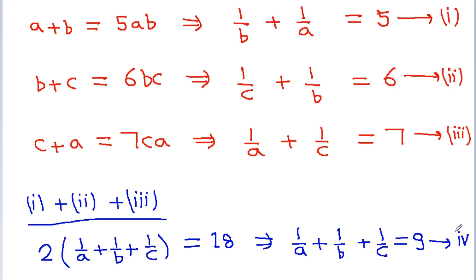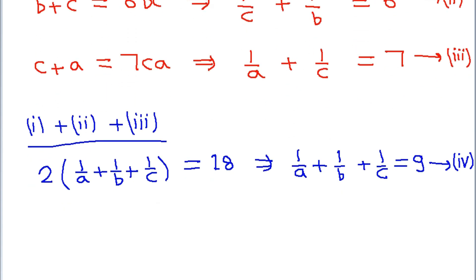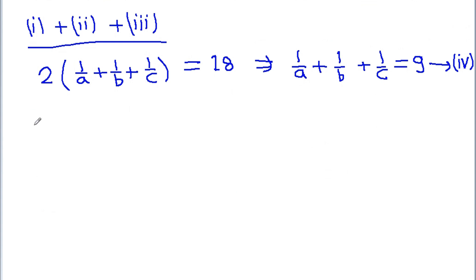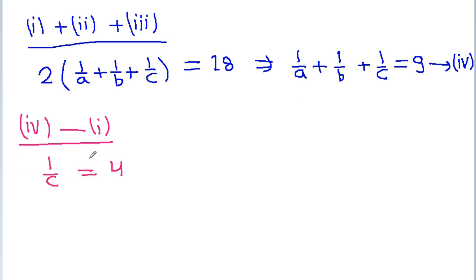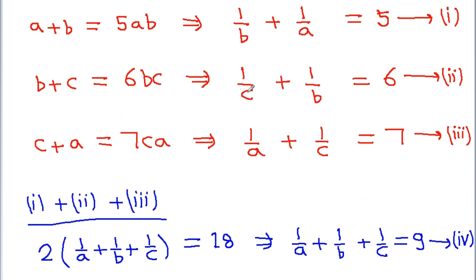Let's call this equation 4. Now if we subtract equation 1 from equation 4, then 1 by b and 1 by a will get cancelled and we get 1 by c is equal to 9 minus 5, that is 4. And if we subtract equation 2 from equation 4, then 1 by c and 1 by b will get cancelled and we get 1 by a is equal to 9 minus 6, that is 3.